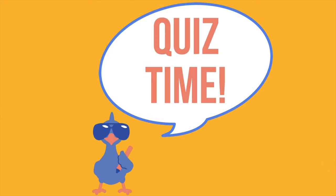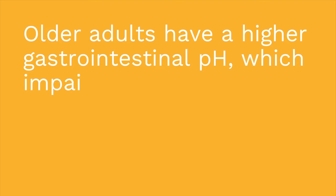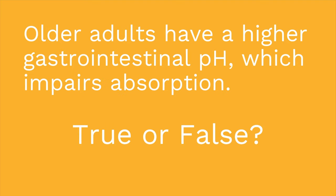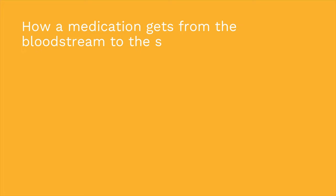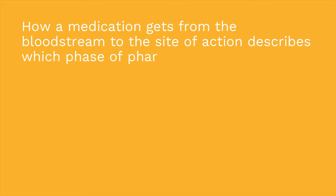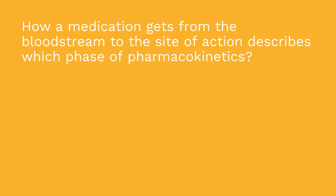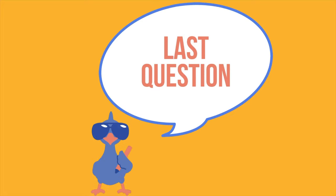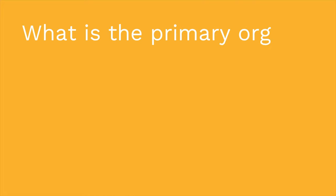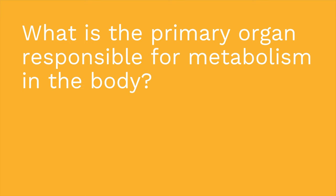Quiz time — I have three questions for you. First, true or false: older adults have a higher gastrointestinal pH, which impairs absorption. The answer is true. Second question: how a medication gets from the bloodstream to the site of action describes what phase of pharmacokinetics? If you said distribution, you are correct. Third question: what is the primary organ responsible for metabolism in the body? The answer is the liver.